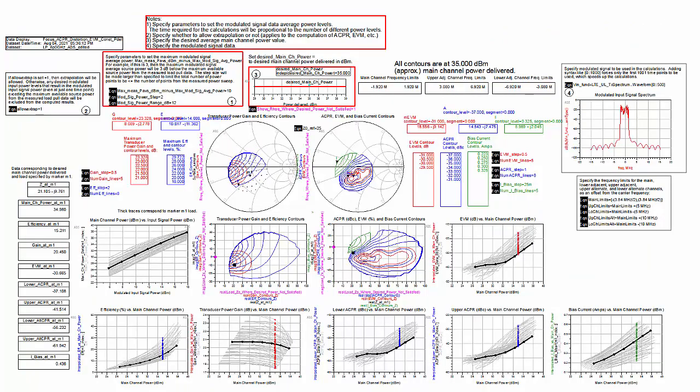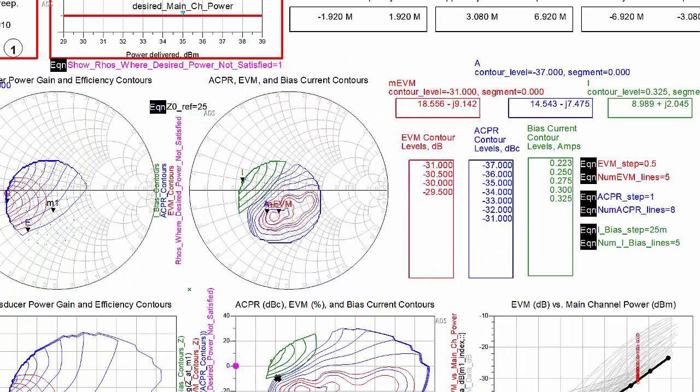If we specify a higher desired main channel power, the EVM contour levels increase, or the area within which a desired EVM level is satisfied gets smaller.